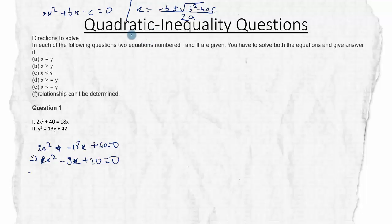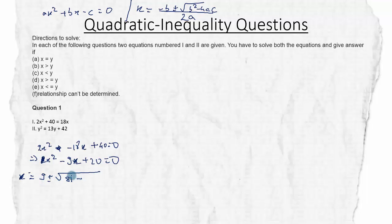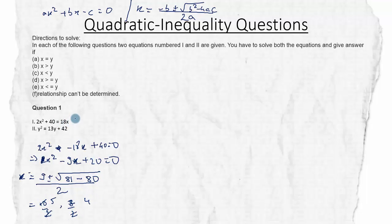Plugging in the values: X = (−(−9) ± √(81 − 4×1×20)) / (2×1) = (9 ± √(81−80)) / 2 = (9 ± 1) / 2. So one value is (9+1)/2 = 10/2 = 5, and the other is (9−1)/2 = 8/2 = 4. We have two values of X: 5 and 4.